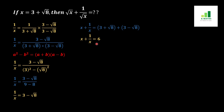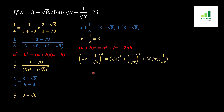In order to find our targeted value, which is under root x plus 1 over under root x, we will apply the (a plus b) whole square formula. As we know, (a plus b) whole square equals a squared plus b squared plus 2ab. Here a is under root x and b is 1 over under root x, so we expand under root x plus 1 over under root x, all squared, using this formula.